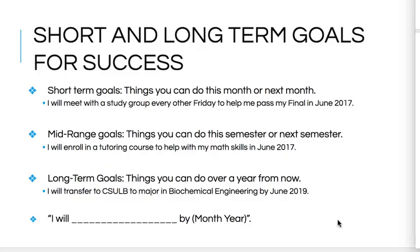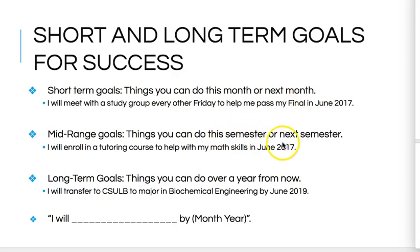Now we will talk about some time frames for our goals. There are three time frames we will use for this assignment: short-term, mid-range, and long-term goals. Short-term goals are things you could do this month or next month. Mid-range goals are things you can do this semester or next semester. Long-term goals are things that you can do over a year from now. Everything will be in the 'I will' format.